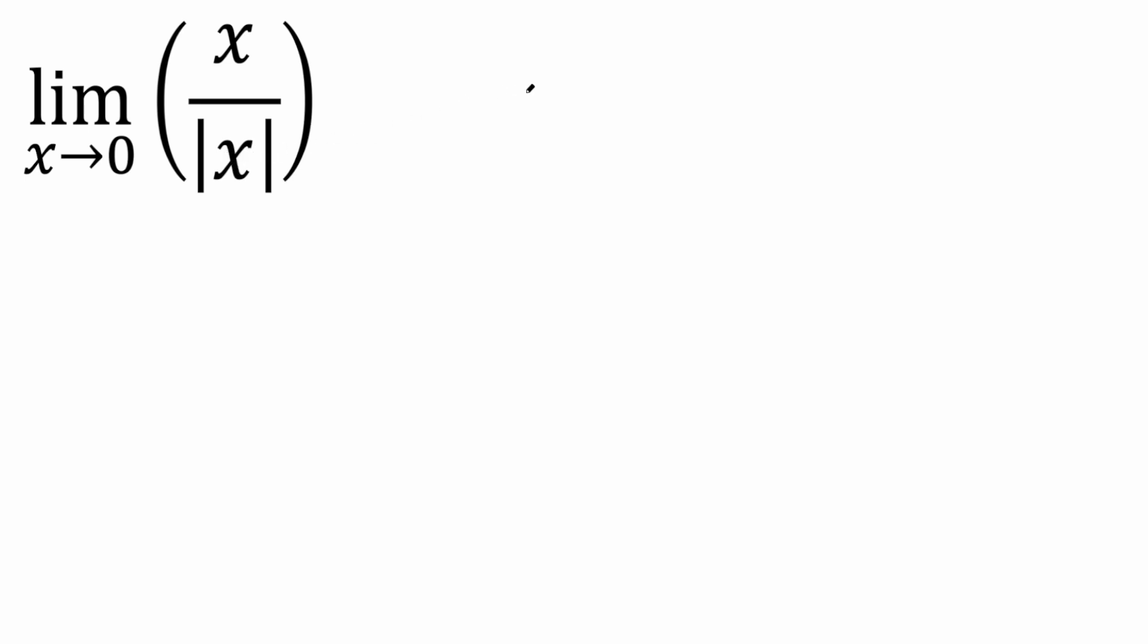Now, because we have an absolute value, we have to remember absolute value of x works in two different ways. You could have x whenever x is greater than or equal to zero. We can think about this. If x is zero, the absolute value of zero is zero. Likewise, if x is zero, zero is zero.